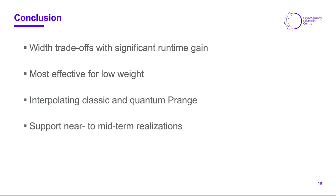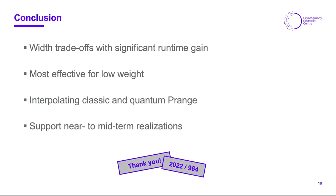To conclude: we have presented trade-offs with significant runtime advantage that still give a constant factor improvement in the exponent. They are most effective for low weight, which is the case for code-based systems, and thus have especially good performance for code-based cryptography. They interpolate continuously between the classical and quantum versions of Prange's algorithm and strongly support the use of already small quantum devices to obtain runtime improvements. The paper is online if you want to check it out.